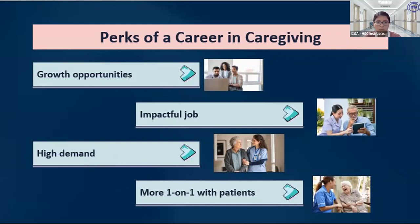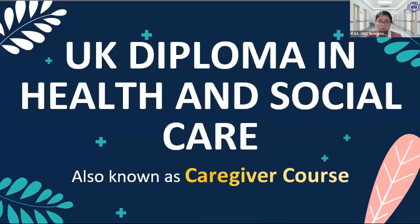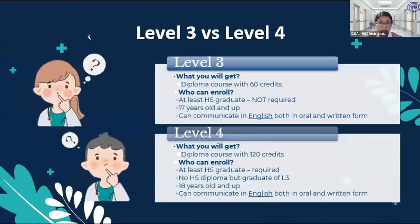Many employers also offer additional benefits. Now let's look at the course we are offering: the UK Diploma in Health and Social Care, also known as the Caregiver Course. Here at ICSA, you can enroll in either Level 3 or Level 4. With Level 3, you receive a diploma with 60 credits. With Level 4, you receive a diploma with 120 credits.